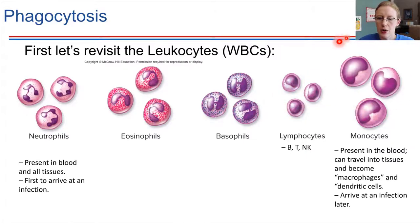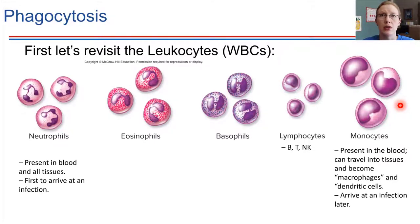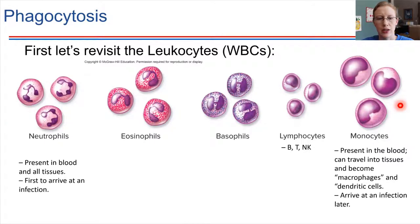The monocytes are present in the blood. However, they have the ability to squeeze out of the blood vessels and make their way into tissues. Once they leave the bloodstream, they can become what we would call macrophages, and also dendritic cells — these all come from monocytes. Those tend to arrive at sites of infection a little bit later than the neutrophils.